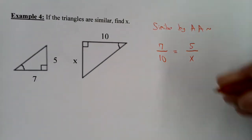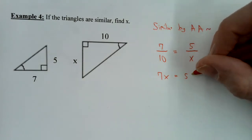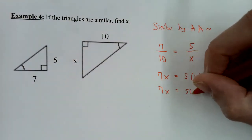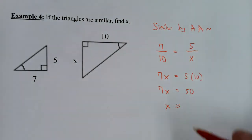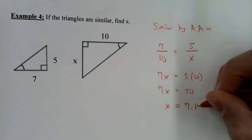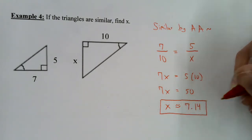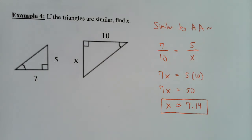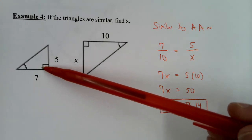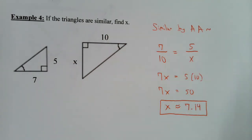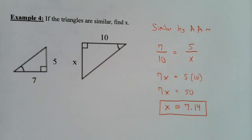Then put 5 over its corresponding side, which is X. So 7 over 10 equals 5 over X. Cross multiply: 7 times X equals 5 times 10, so 7X equals 50, and X is approximately 7.14. Make sure all numerators come from one triangle and all denominators from the other, and match each side to its corresponding side.